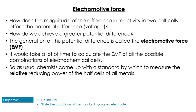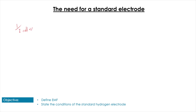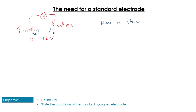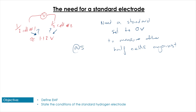It takes a long time to work these out, so we need a standard to measure against. If I connect two half-cells and get, let's say, a 1.12 volt EMF, how do I know which half-cell contributed what? That's where we get a need for a standard - something we can set to zero volts - that we can measure all other half-cells against.